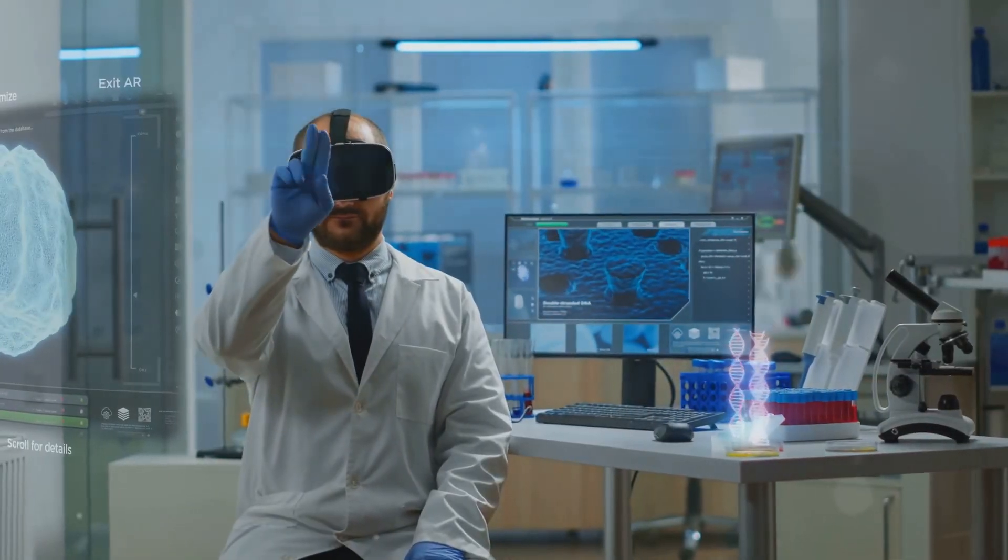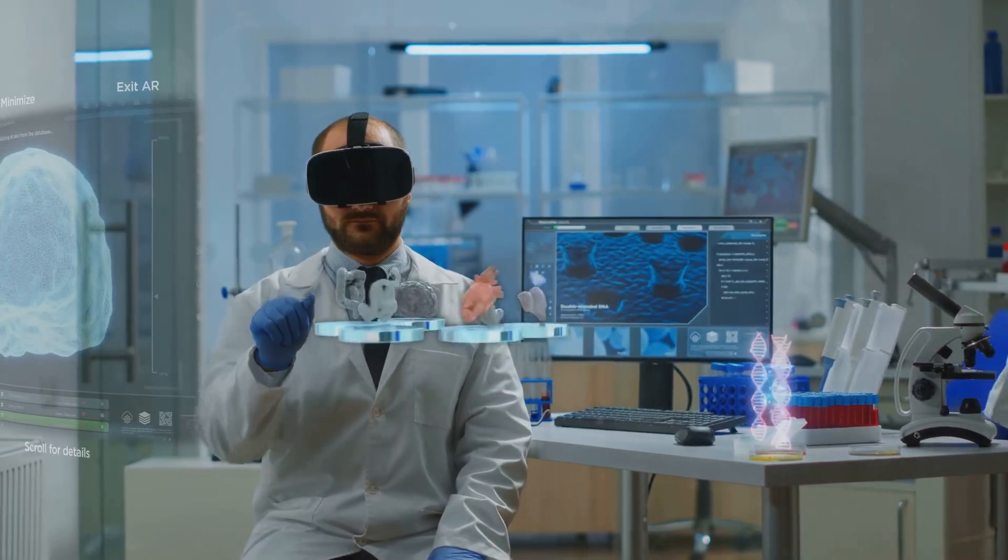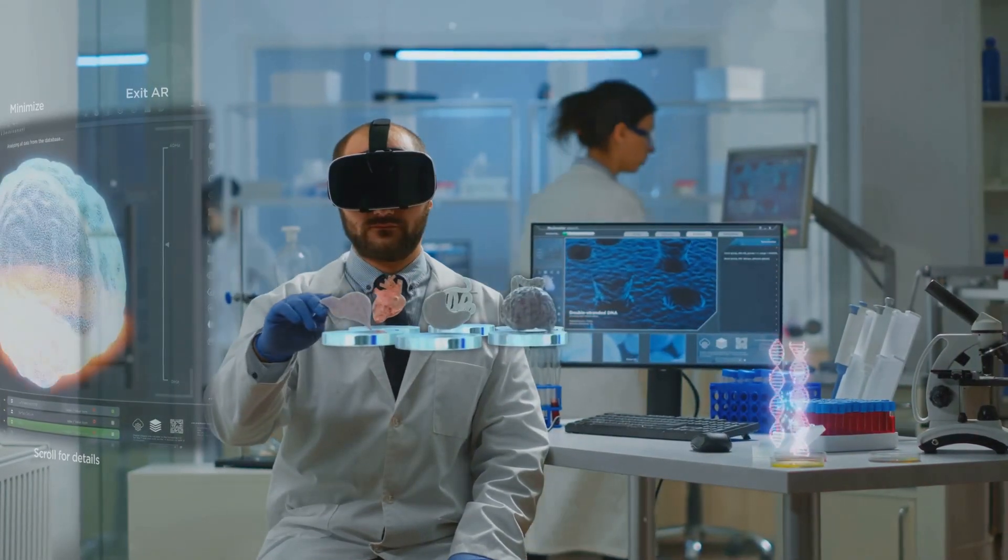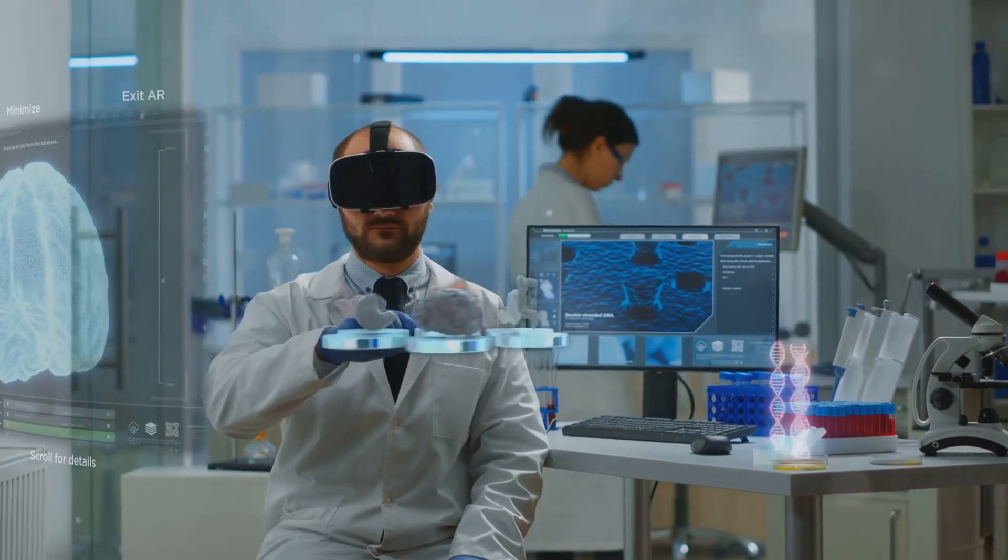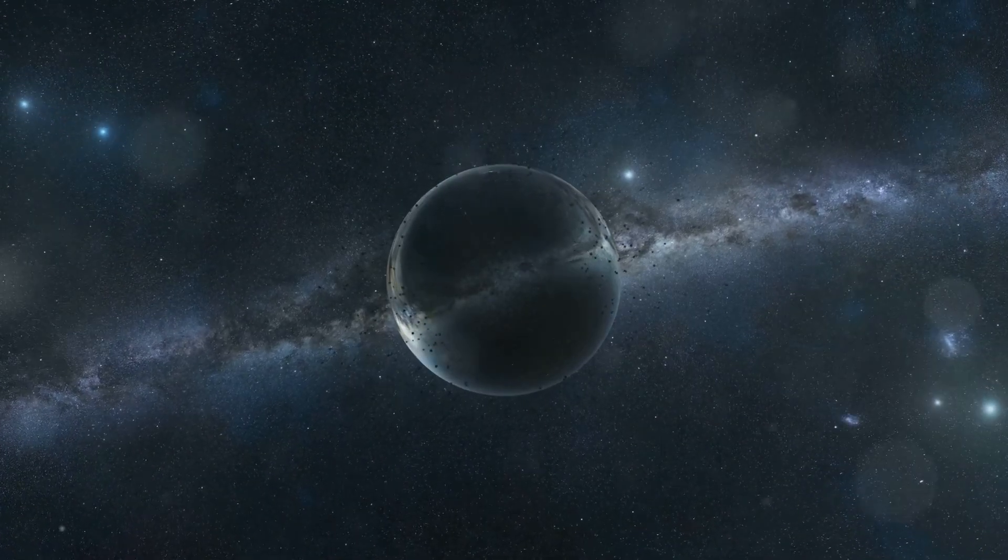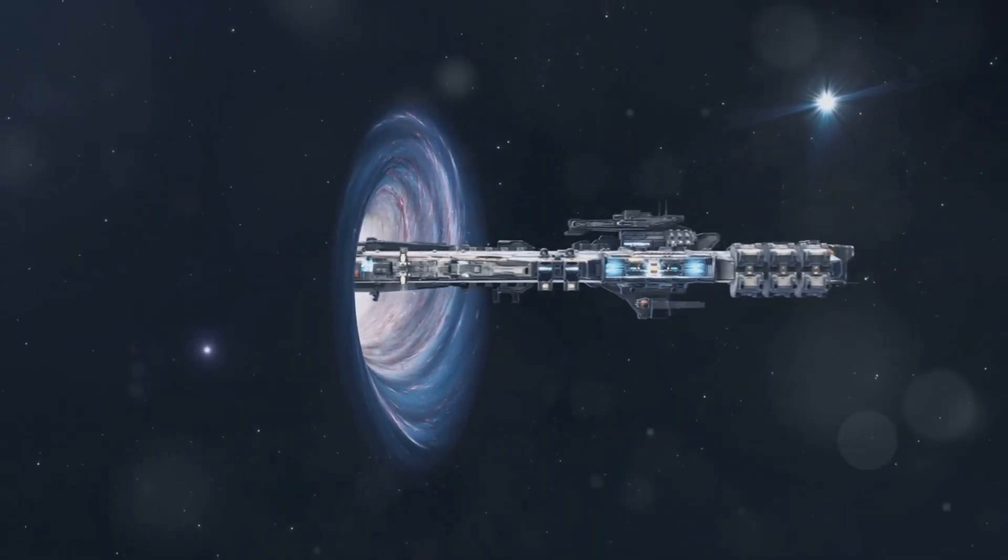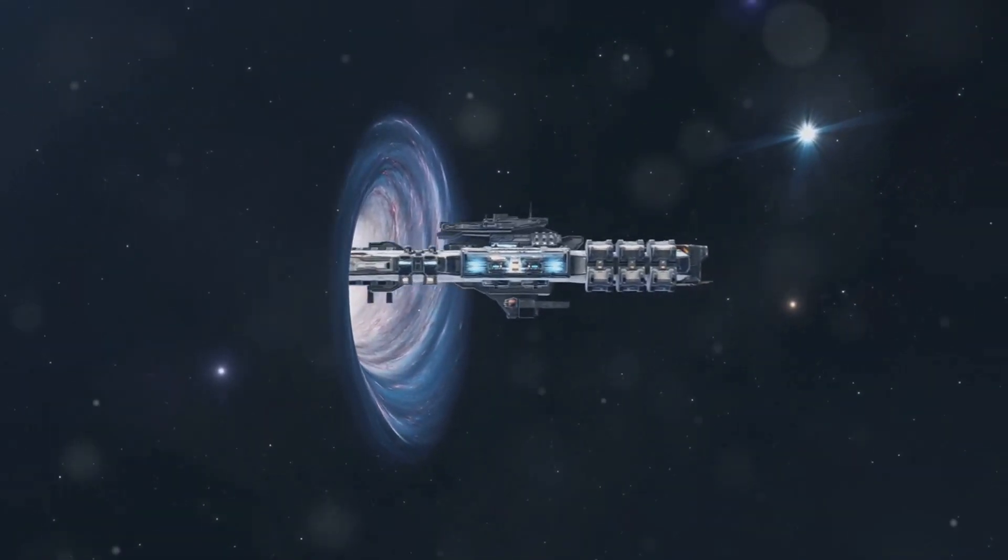Two of the most intriguing and mysterious phenomena in the vast expanse of space are wormholes and black holes. These cosmic entities have fascinated scientists and science fiction enthusiasts alike, inspiring countless theories and stories about the nature of space and time. But what exactly are wormholes and black holes? How do they differ? And could they hold the key to unlocking the secrets of interstellar travel?